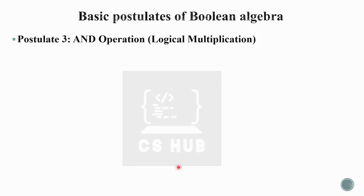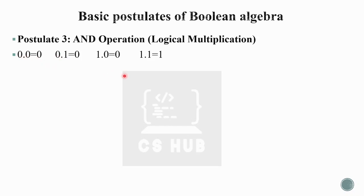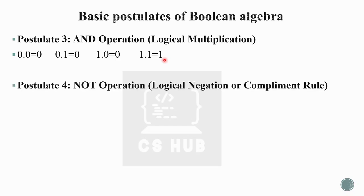The third postulate covers the AND operation — logical multiplication. The rules are: 0 AND 0 equals 0, 0 AND 1 equals 0, 1 AND 0 equals 0, and 1 AND 1 equals 1. This is logical multiplication.